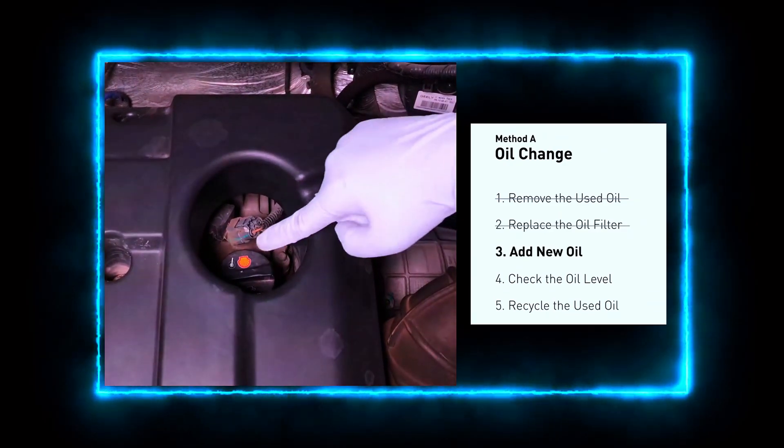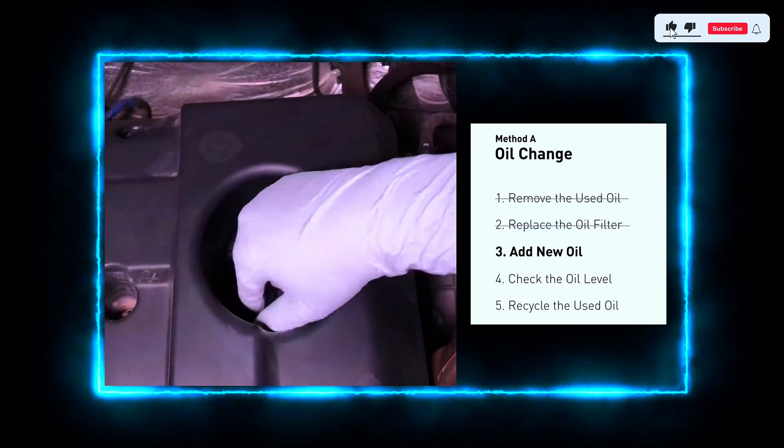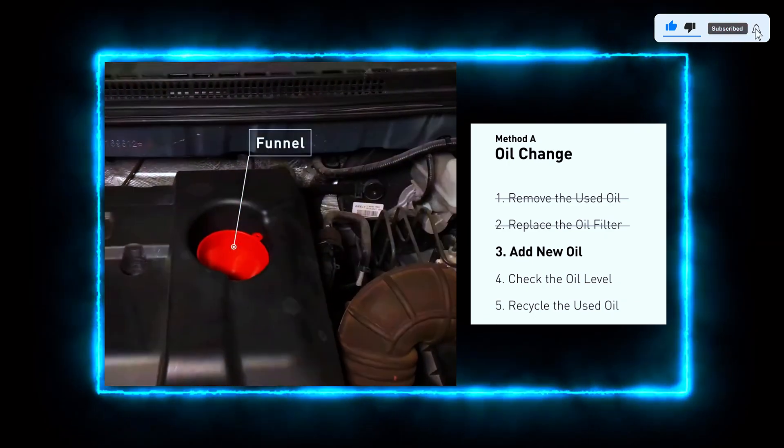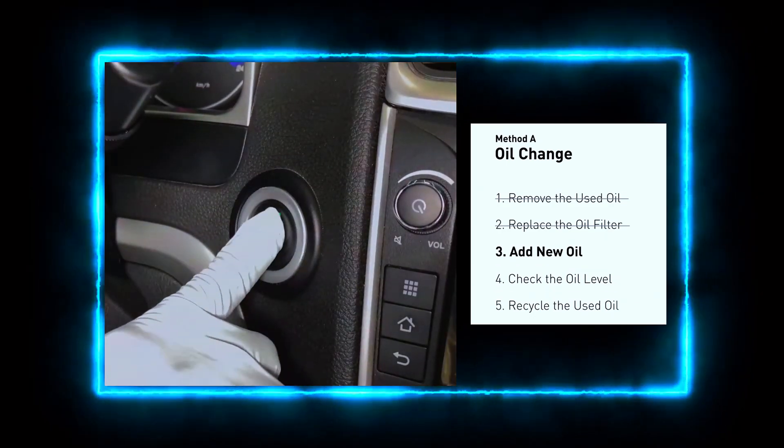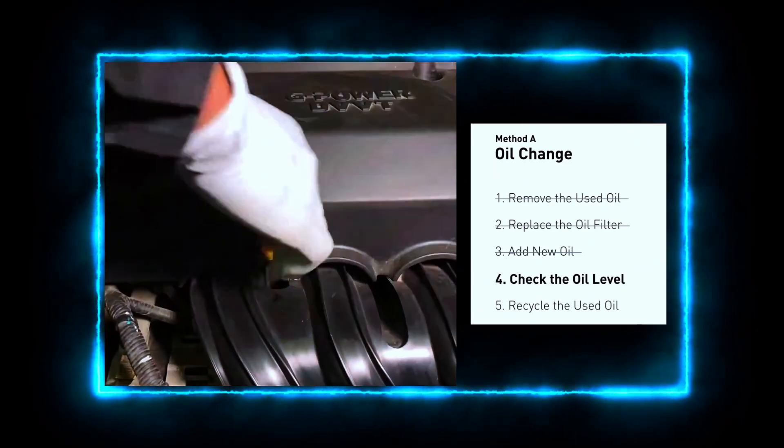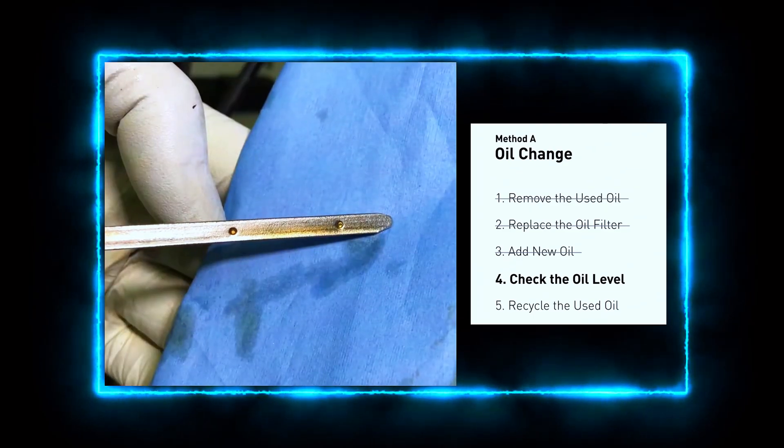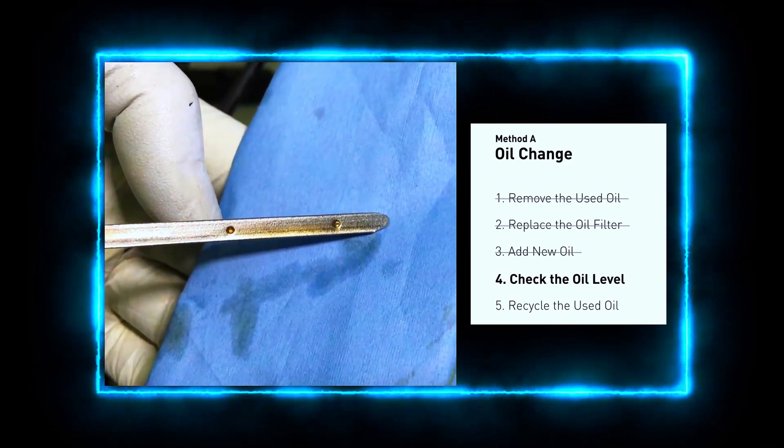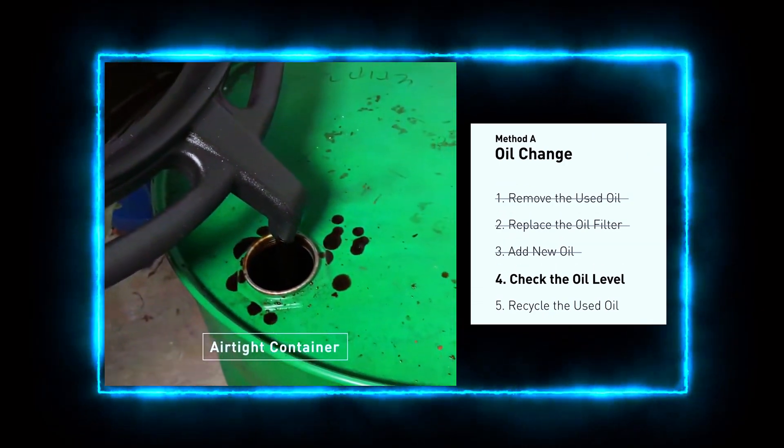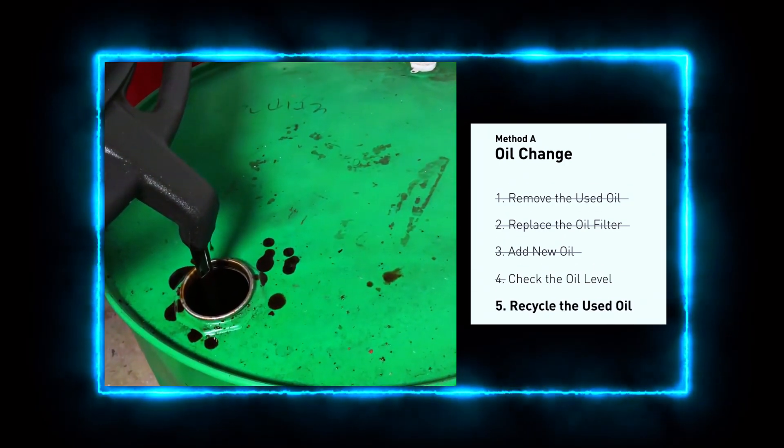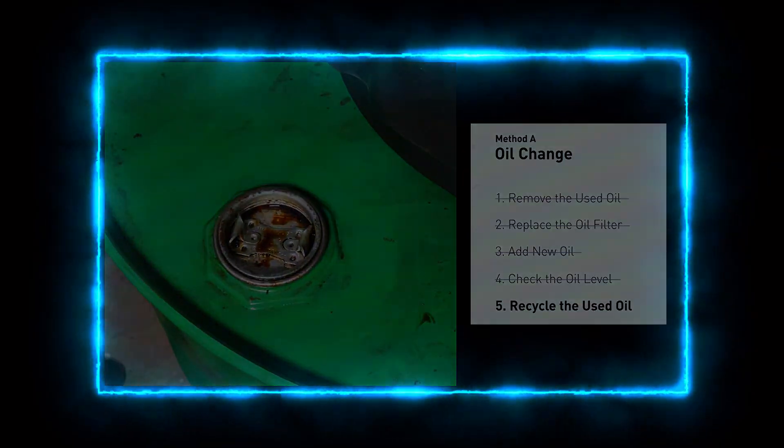With the old oil drained and the new filter in place, it's time to add fresh oil. Consult your car's manual for the correct oil capacity and type. Pour it in using a funnel to avoid spills. Start your engine and let it run for a few minutes. Then, turn it off and check the oil level using the dipstick. Add more oil if needed and recheck until you reach the correct level. Don't forget to dispose of the old oil properly. Most auto parts stores accept used oil for recycling. Never dump it in the trash or down the drain.